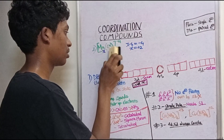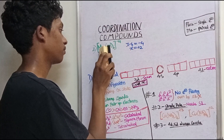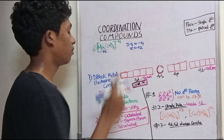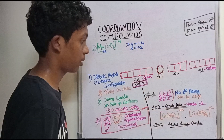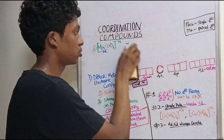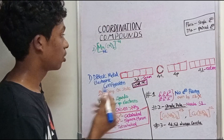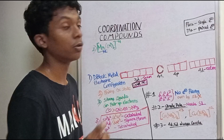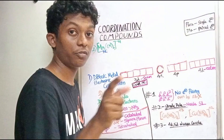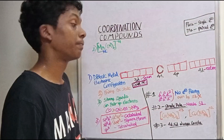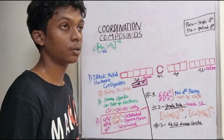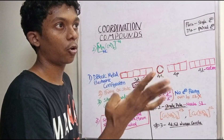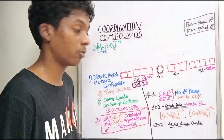So x is plus 2, meaning Manganese is Mn²⁺. Now we will start with the electronic configuration of the oxidation state. Going through the transition metals: scandium, titanium, vanadium, chromium, manganese — manganese is D5.